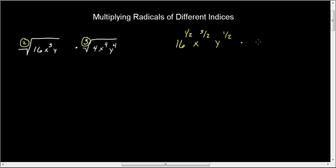And we would multiply in 4 to the 1 third. And this would be x, the power is 4 over the root is 3. And then for y, it would also be 4 over 3. And then if you do this, you add the fractions.